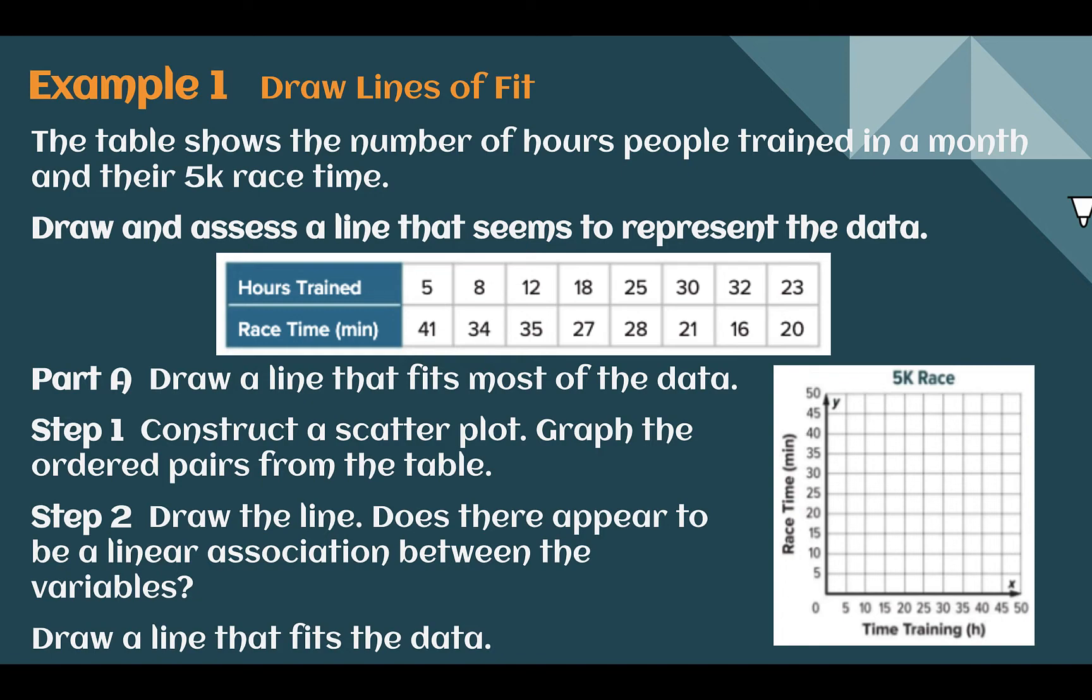Example one, draw lines of fit. The table shows the number of hours people trained in a month and their 5k race time. Draw and assess a line that seems to represent the data. Let's make our scatterplot. We can see down here their training time is on the x-axis, so that will be our x, and our race time is our y-axis.